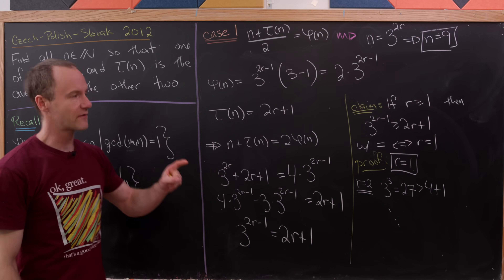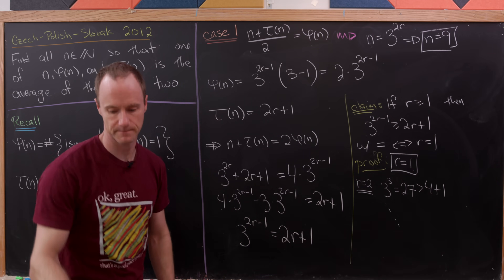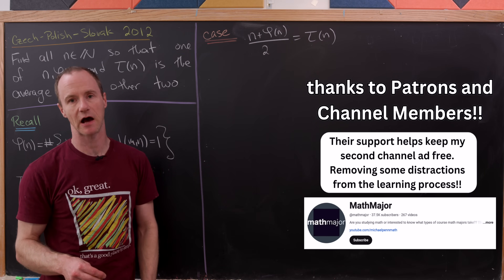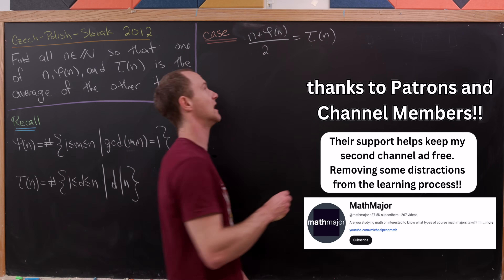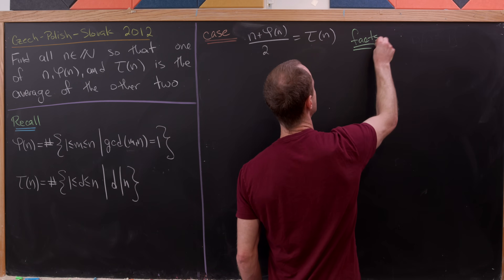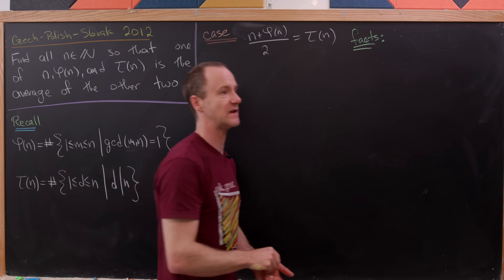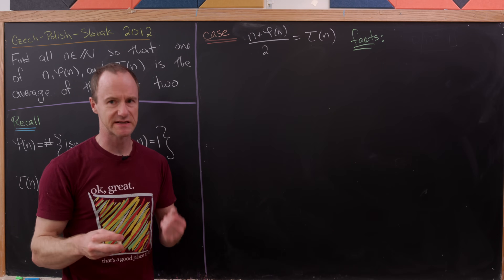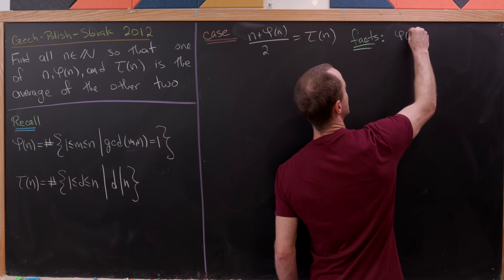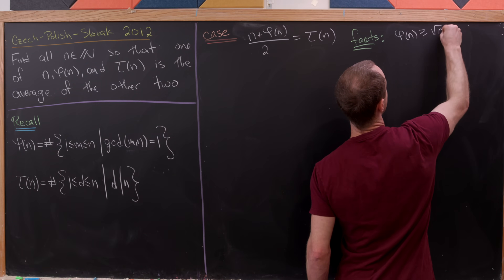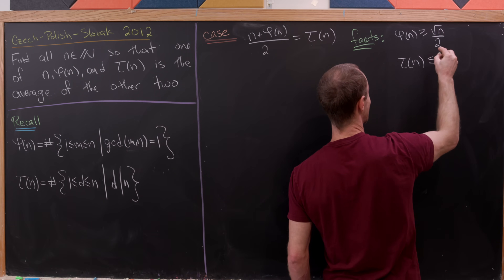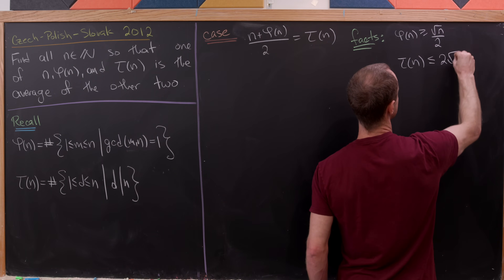That covers Case 1. For Case 2, we're in the setting when τ(n) = (n + φ(n))/2, switching the roles of φ and τ. Now let's list some standard inequality facts about φ and τ: φ(n) ≥ √n / 2 and τ(n) ≤ 2√n.